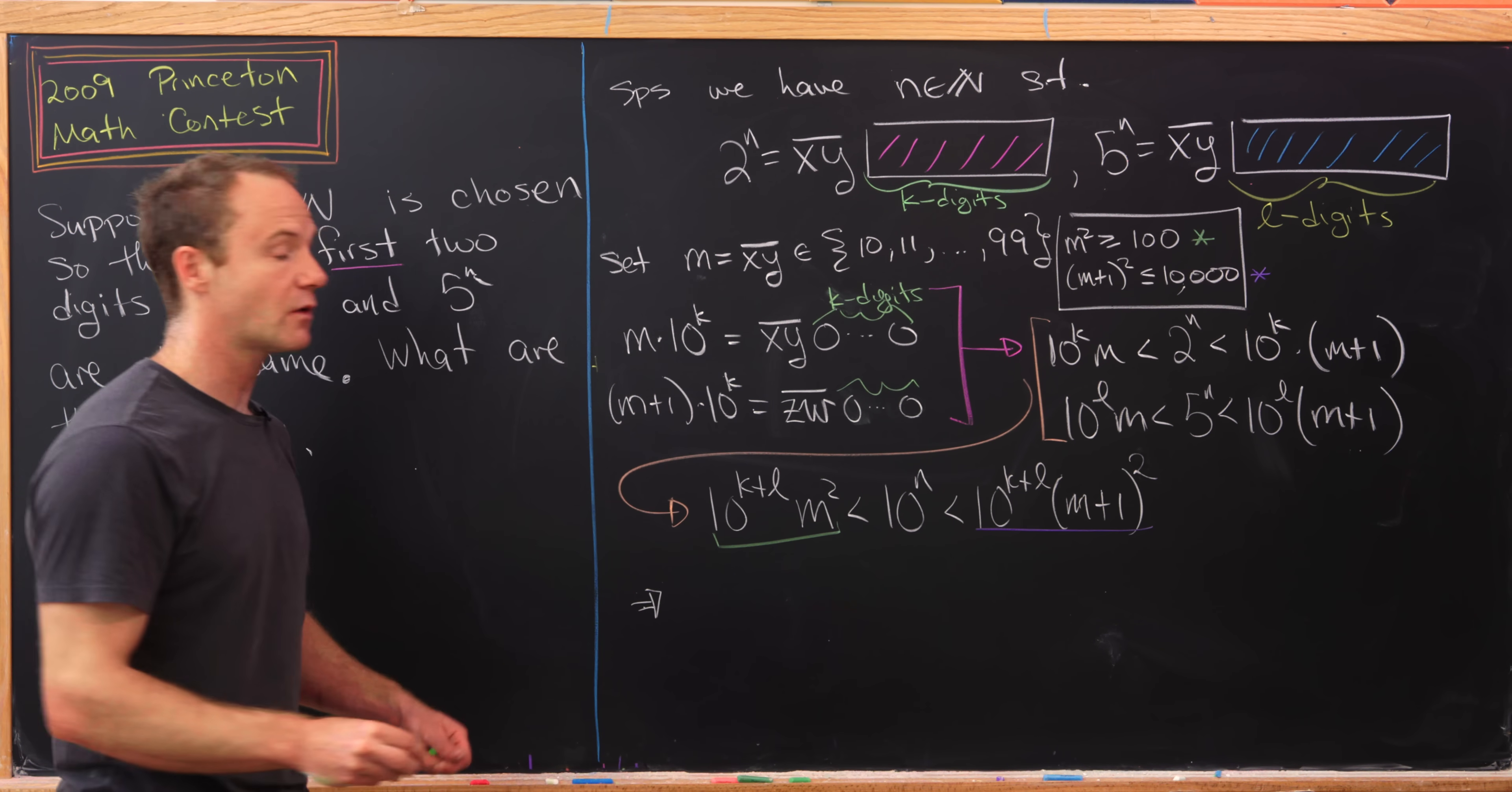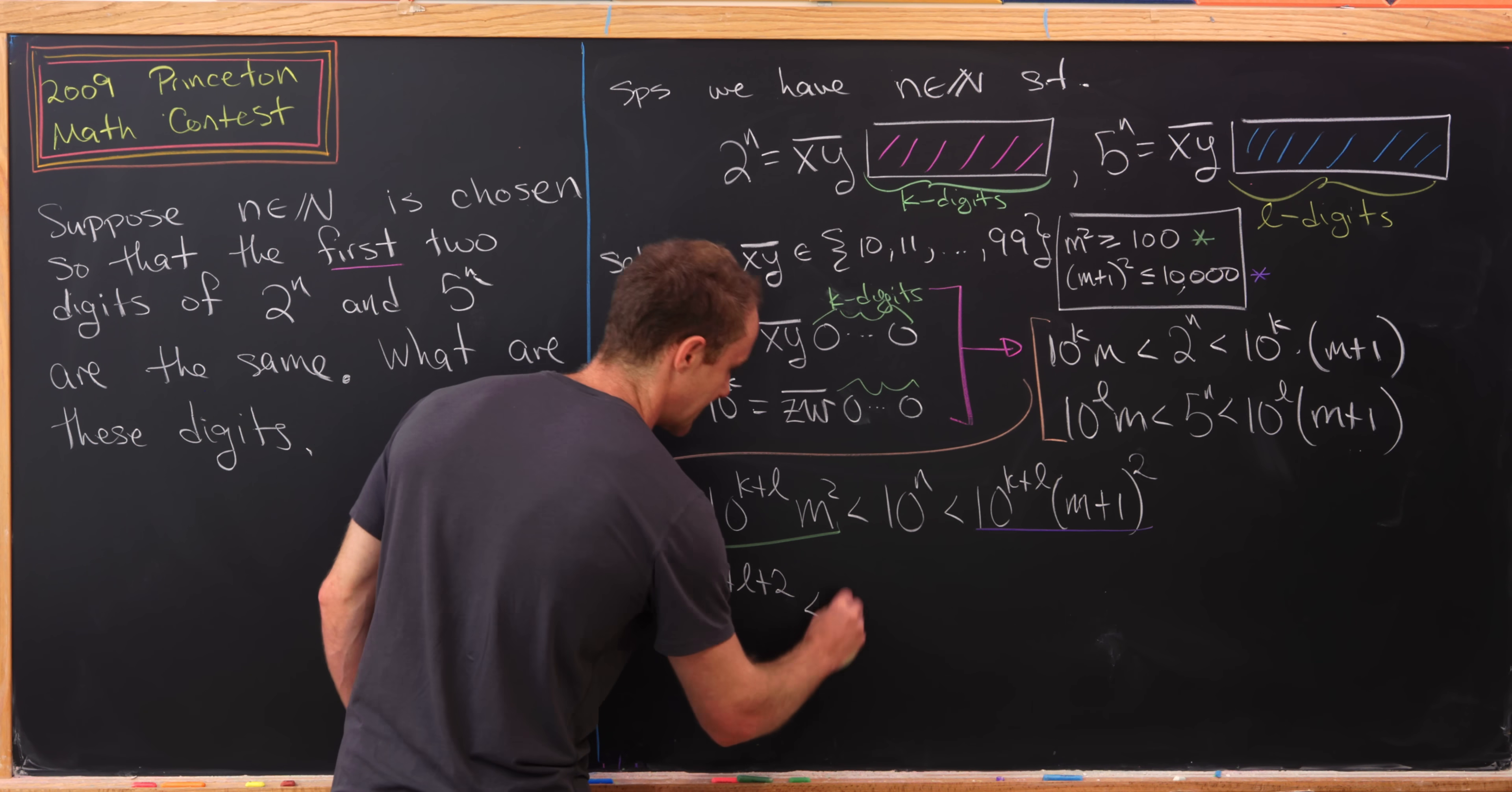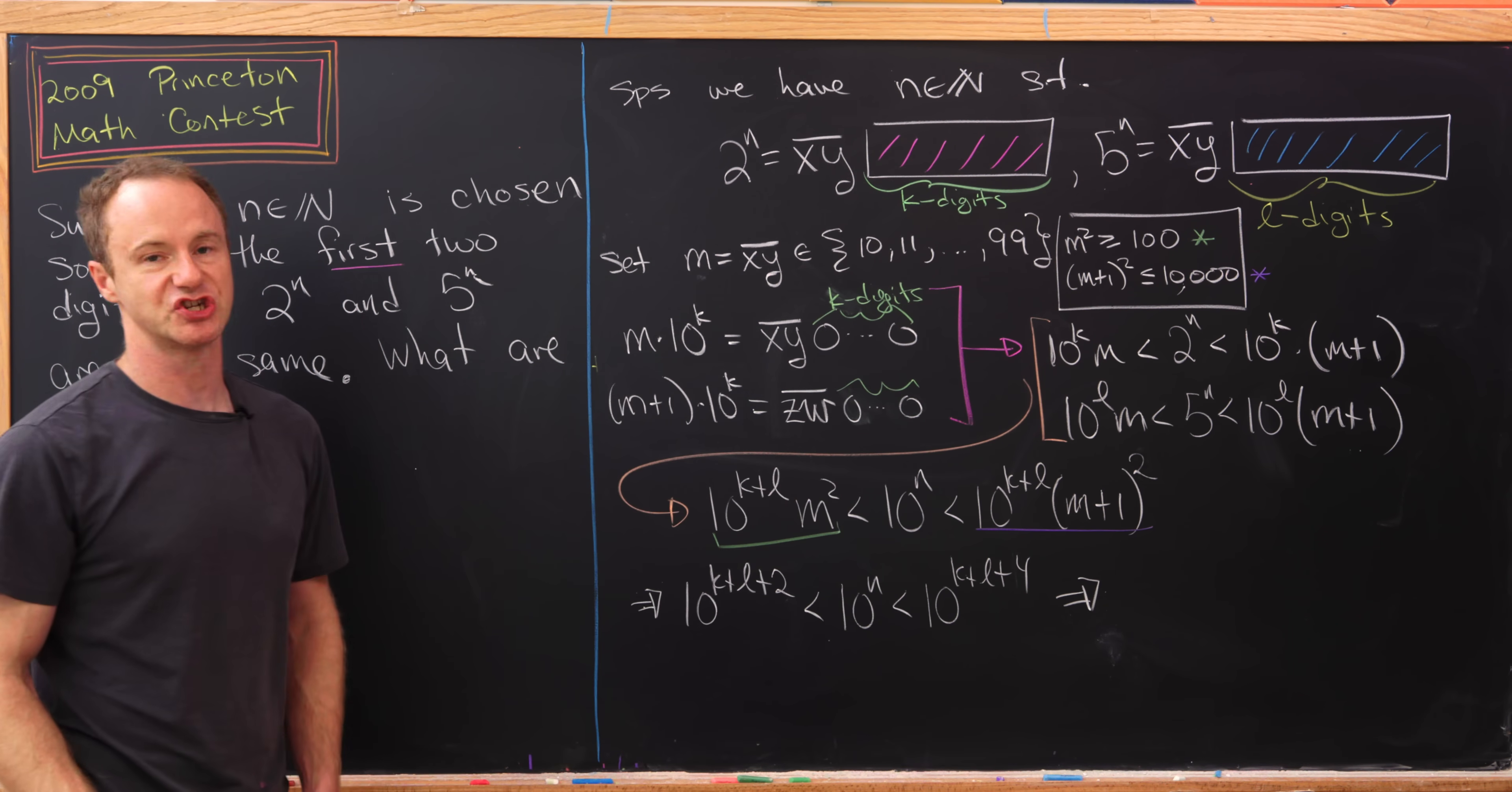That gives us simply an inequality of all powers of 10. We'll have 10^(k+l+2), because 100 is 10^2, is less than 10^n, which in turn is strictly less than 10^(k+l+4). And again that's just from doing that replacement which I just described.